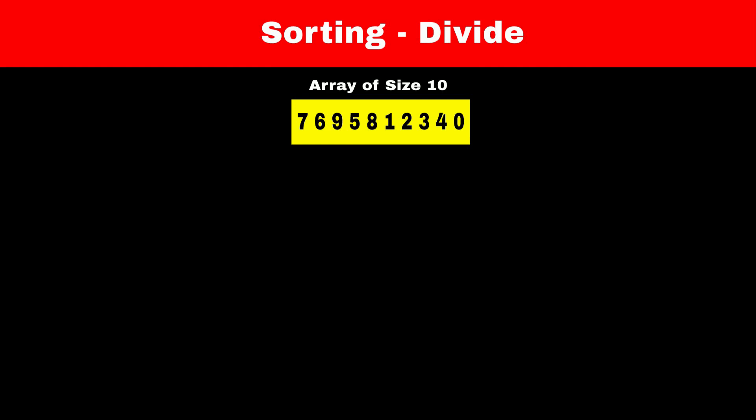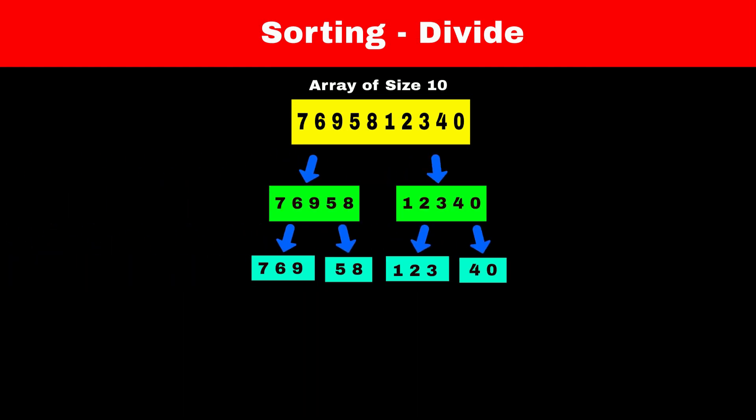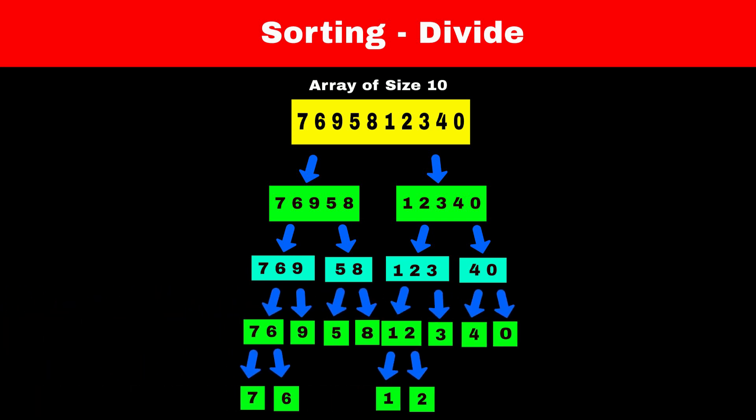We will split it into two arrays of size 5. We can still split array of size 5 into array of size 3 and 2. We will split the array until we get array with single element. An array with single element is the smallest sub-problem that we can solve. In other words, array with 1 element is already sorted.